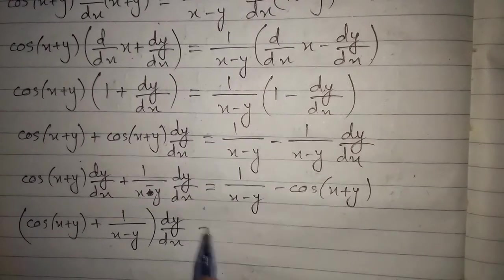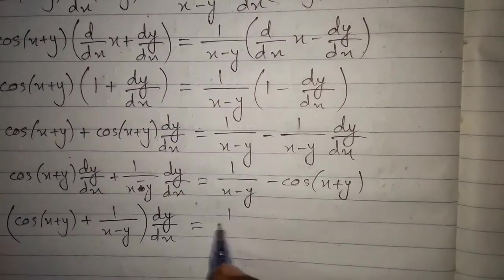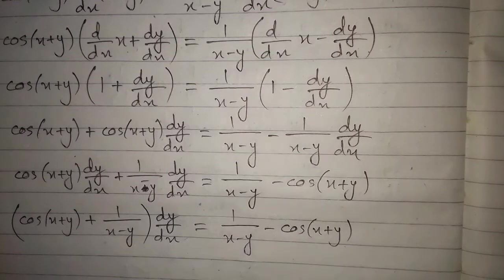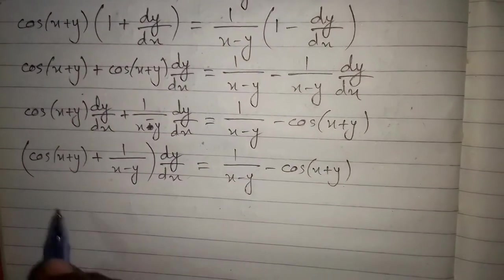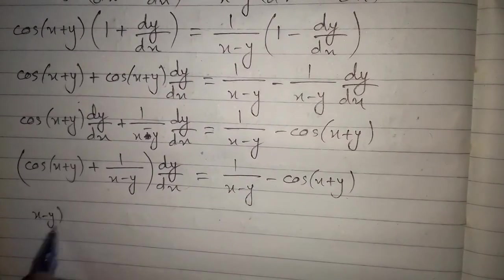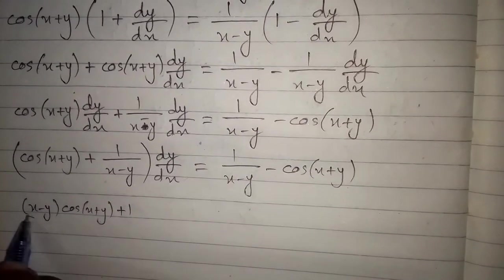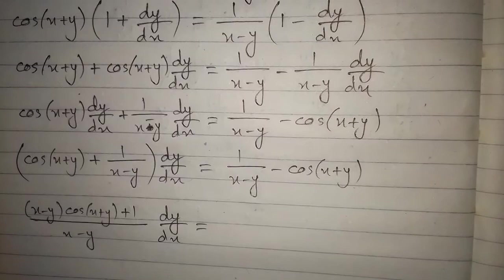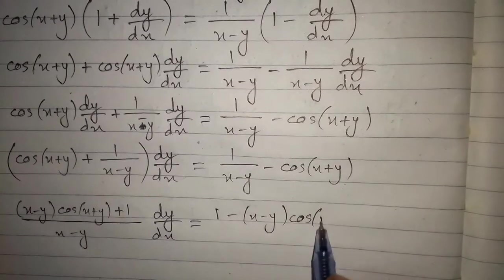We factor out dy/dx on the left side, giving: cos of x plus y plus 1 upon x minus y, multiplied by dy/dx. On the right side we have 1 upon x minus y minus cos of x plus y. Multiplying through by x minus y gives x minus y times cos of x plus y plus 1, over x minus y, times dy/dx, and on the right, 1 minus x minus y times cos of x plus y, over x minus y.